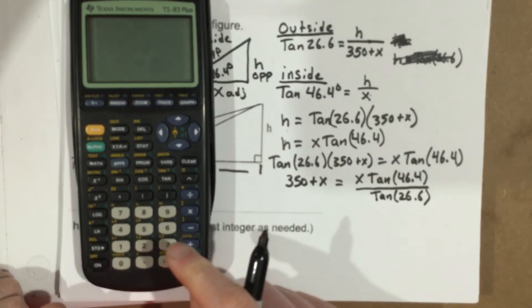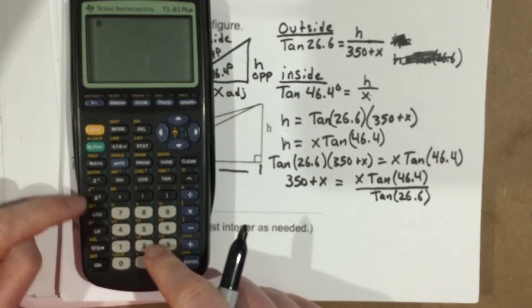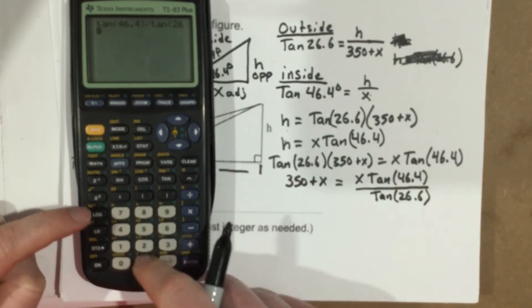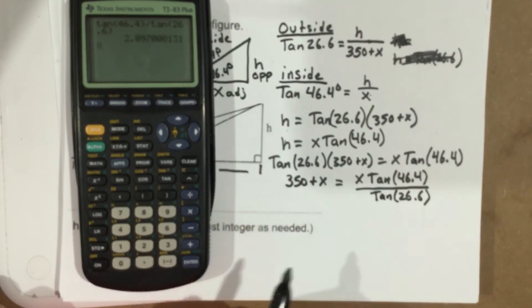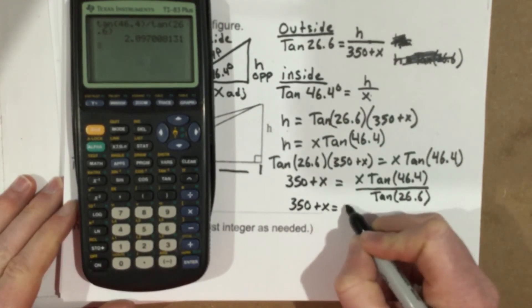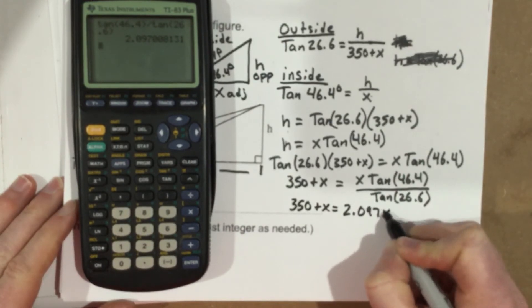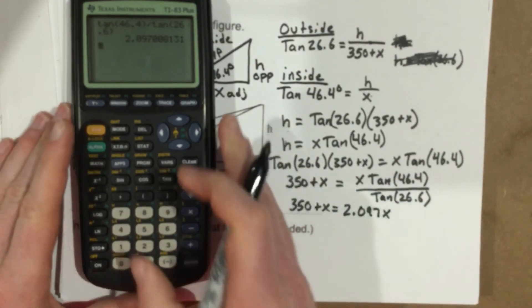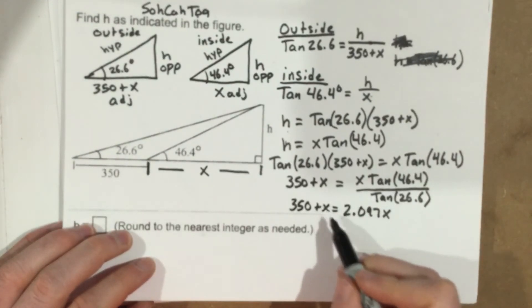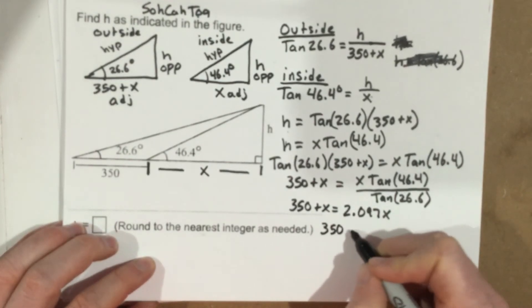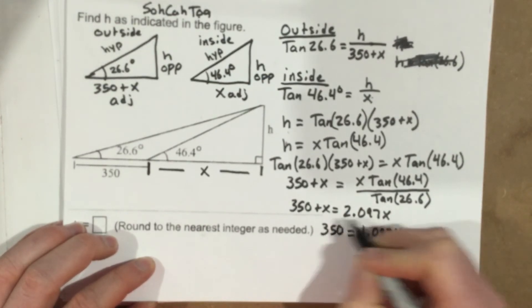Now I'm going to use my calculator, and I'm going to plug in tan 46.4. So tan 46.4, I'm going to divide it by tan of 26.6, and it gives me 2.097. I'm going to use 2.097 as my coefficient here. So I'm going to say 350 plus x equals 2.097x. Now at this point, you should see kind of where to go from here. We have an x on the right side and an x on the left side. Let's subtract the one over. We get 350 equals 1.097x when you subtract an x from each side.